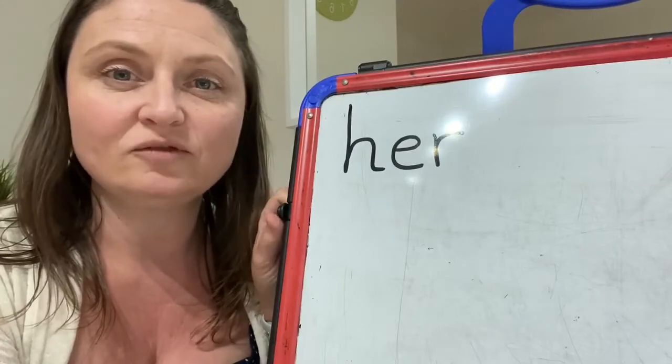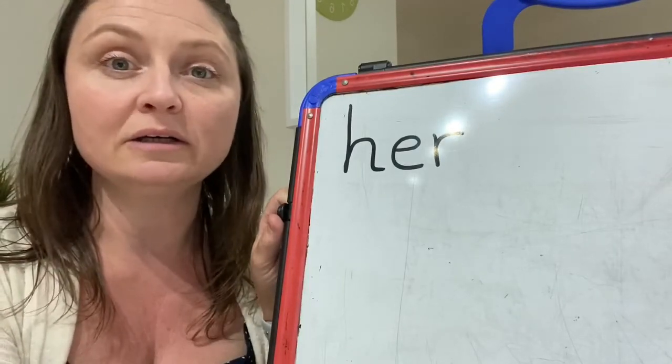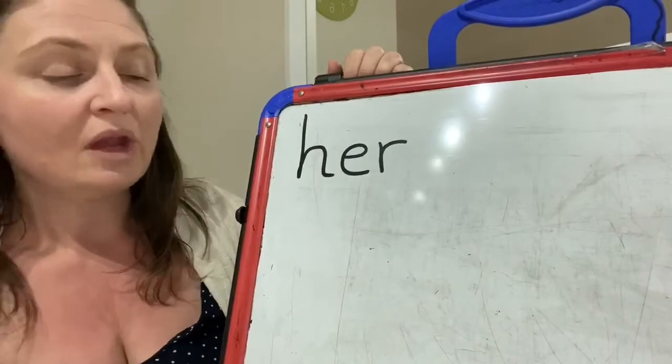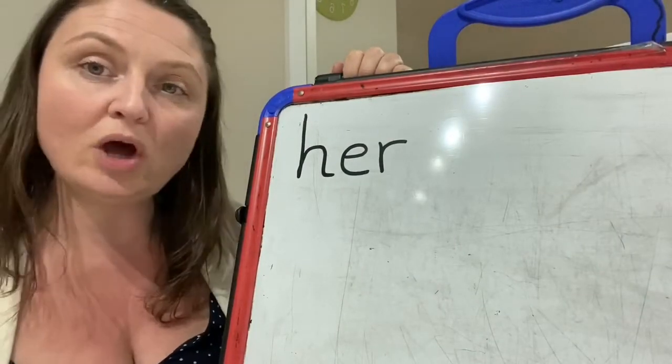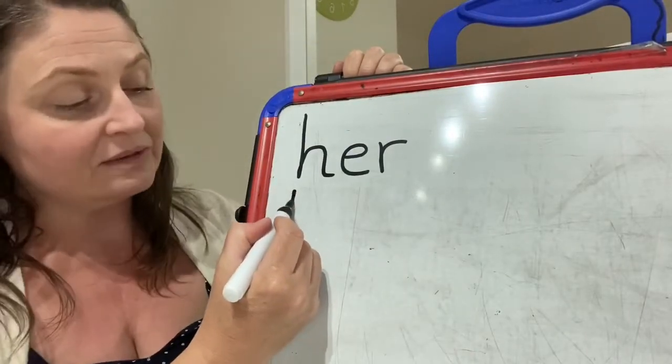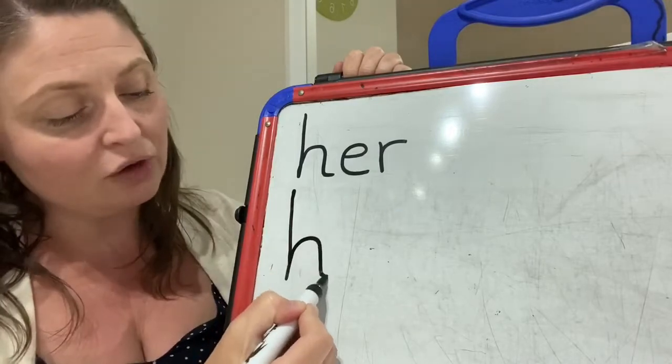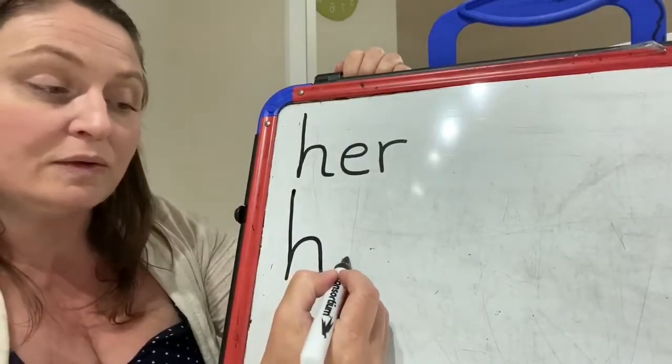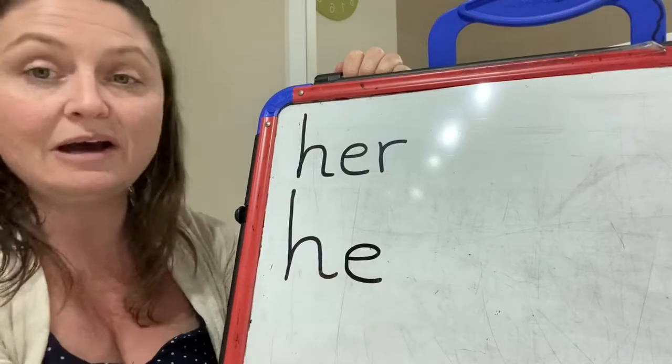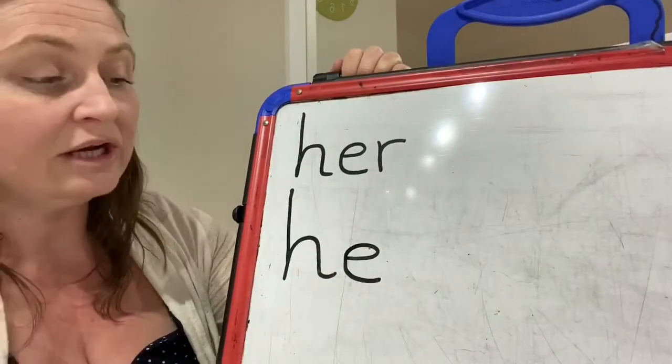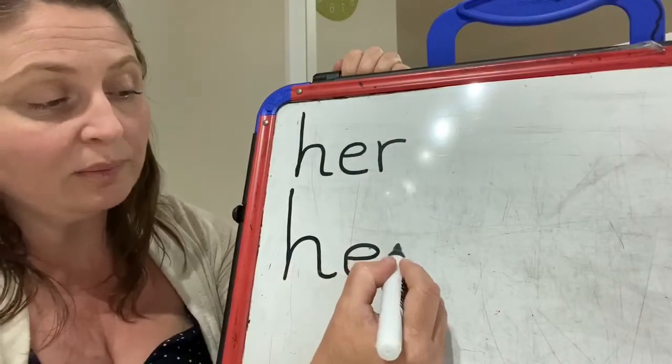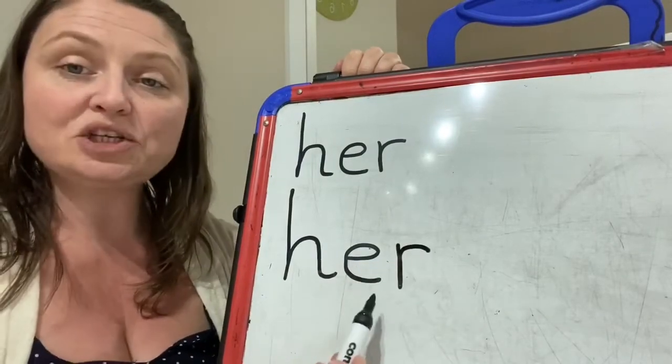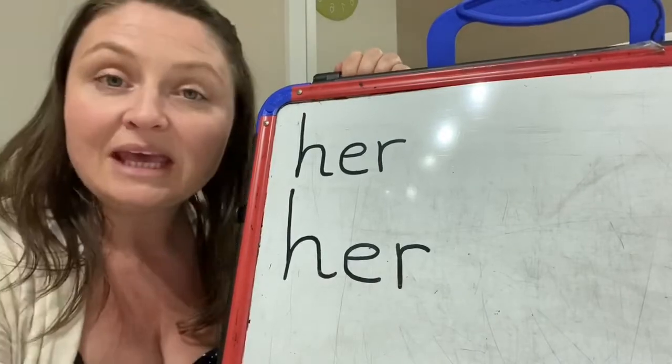That's right, tricky word her. When we're writing tricky word her, we need to think about our letter formation. So our first letter is an ascending letter, it's a one-armed robot. It starts at the top, goes down with a straight back, bounces back up and over. Our h. Our next letter is part of the curly caterpillar family. It goes across and round, our e. And the last letter of her is our r. Our r starts at the top, it's part of our one-armed robot family again. Down it goes, bounces back up and over. H, e, r, her.